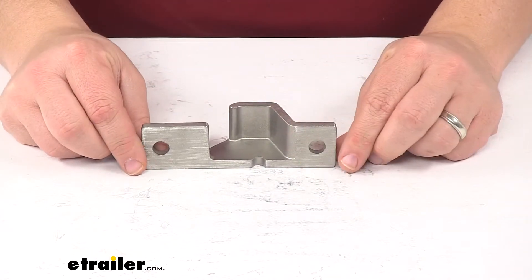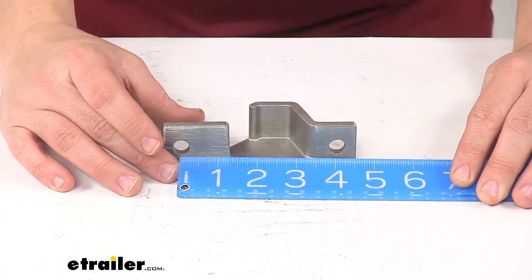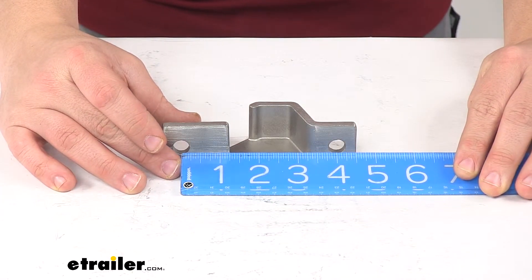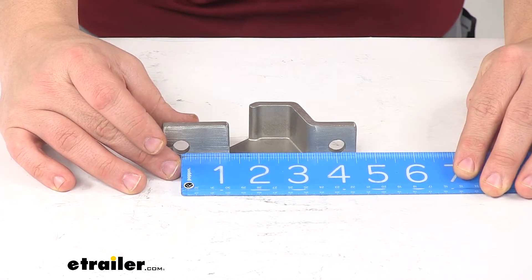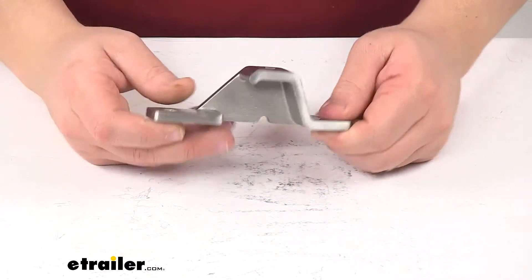And then our mount holes. These are separated from one another on center by four inches, and the mount hole diameter is thirteen thirty-seconds of an inch.